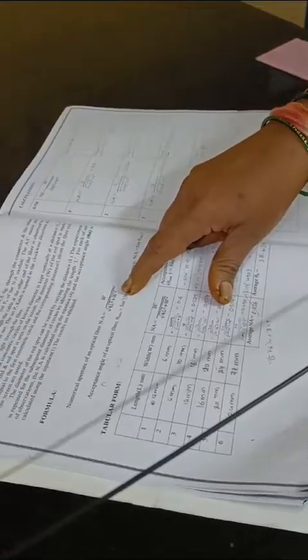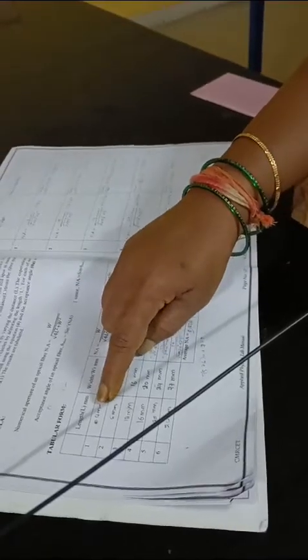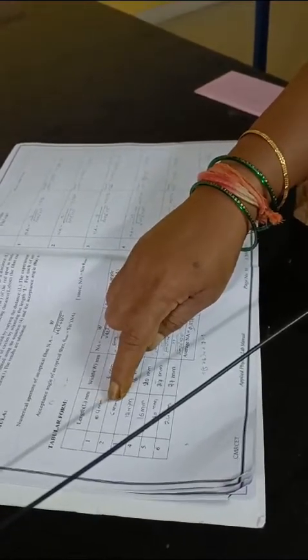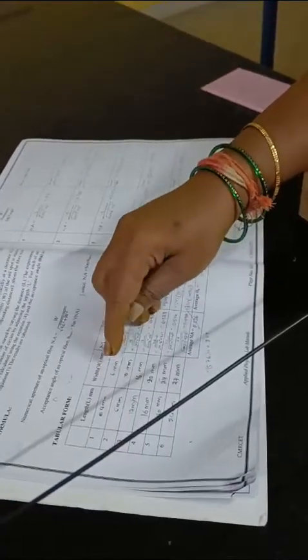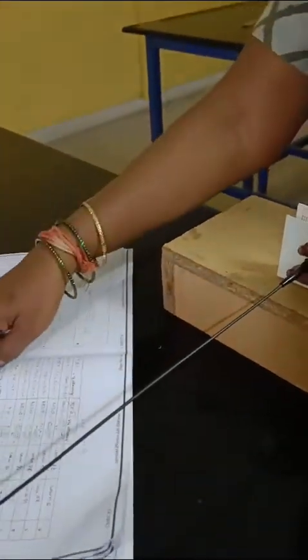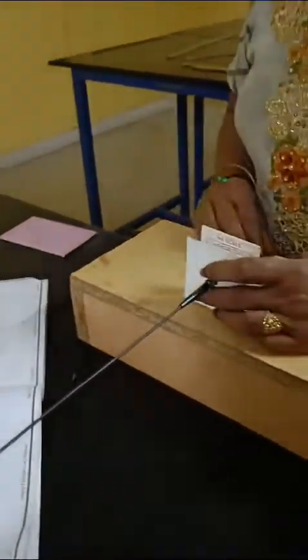And W is the width of the light spot. For different lengths, such as 4mm, 8mm, 12mm, 16mm, 20mm and so on, we find the width of the light spot and calculate the numerical aperture using L and W.